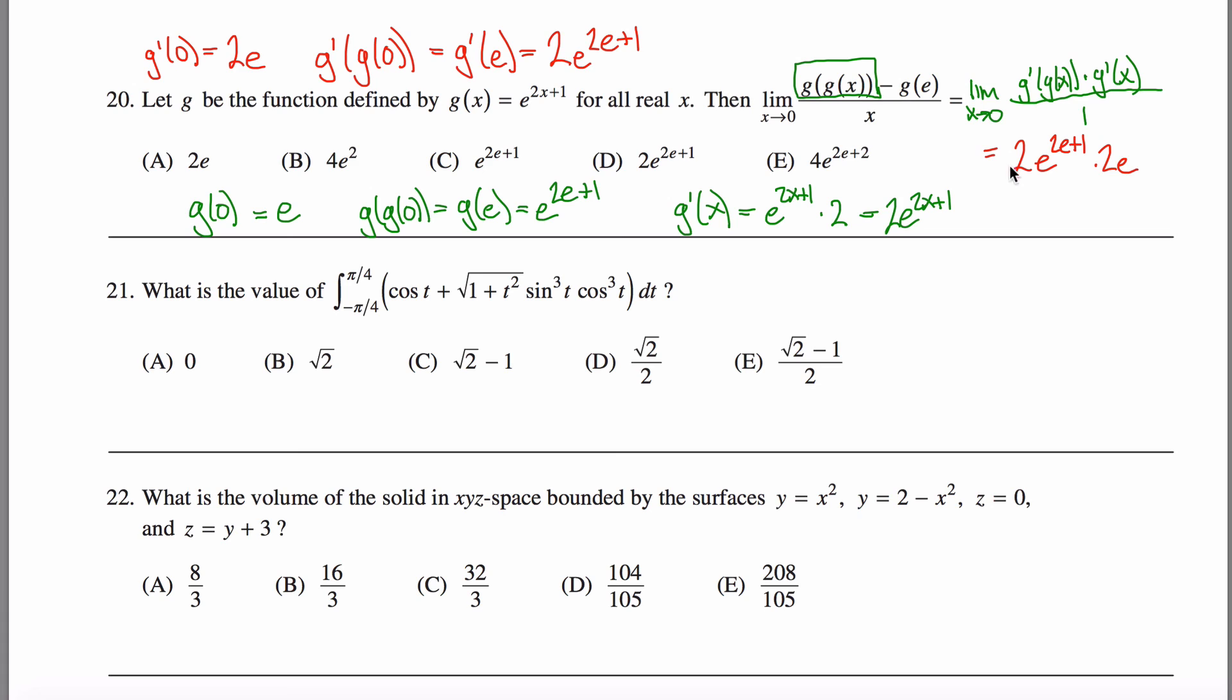Well, you kind of do, because the two times the two gives you a four, and then e to the 2e plus 1 times e to the one. My exponent rules say that when you're multiplying together two exponents that have the same base, you can add the exponents. So in the numerator, I have 2e plus 1 plus 1, aka 2e plus 2. And 4e to the 2e plus 2 looks like answer E here.